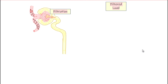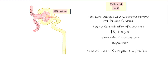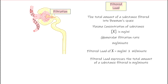The filtered load is calculated by taking the plasma concentration of a substance — often listed in milligrams per milliliter, measured via a blood test — and multiplying it by the glomerular filtration rate in milliliters per minute. The milliliters cancel out, giving us the filtered load in units of milligrams per minute.